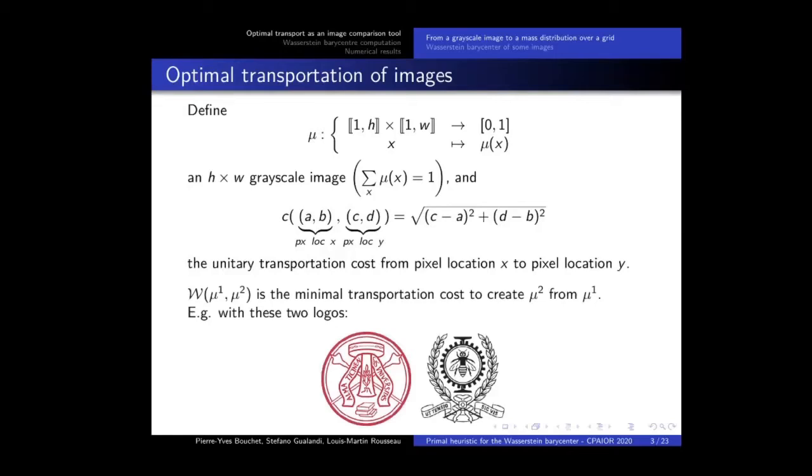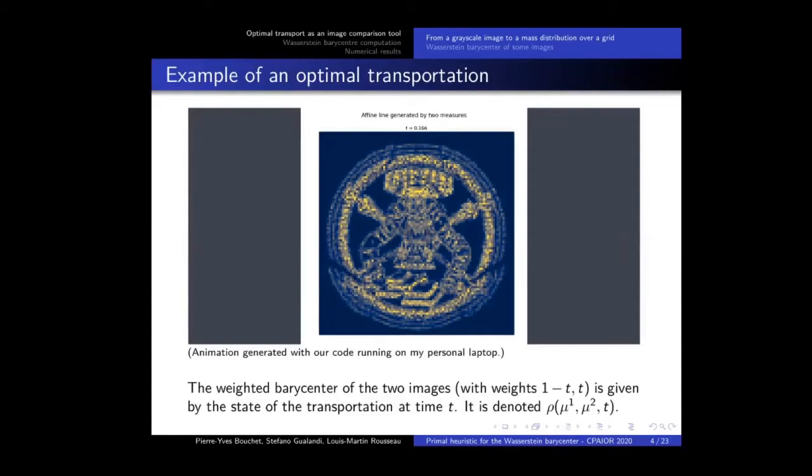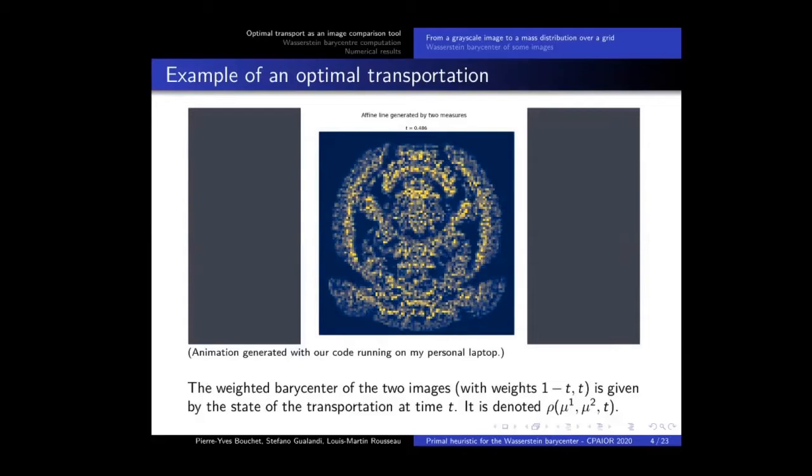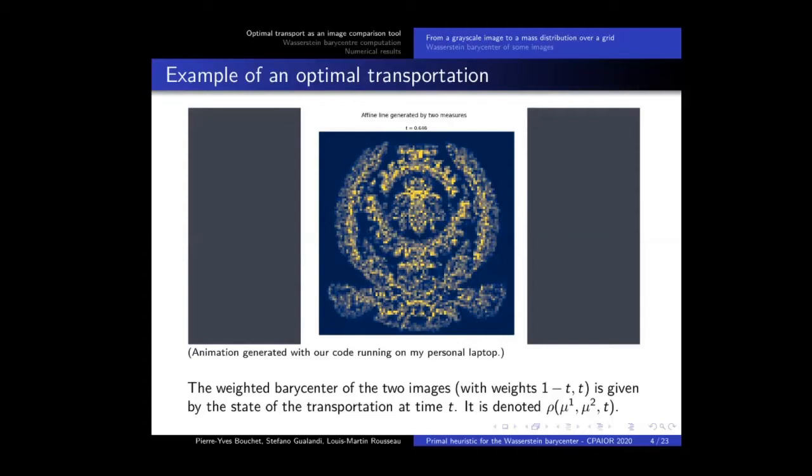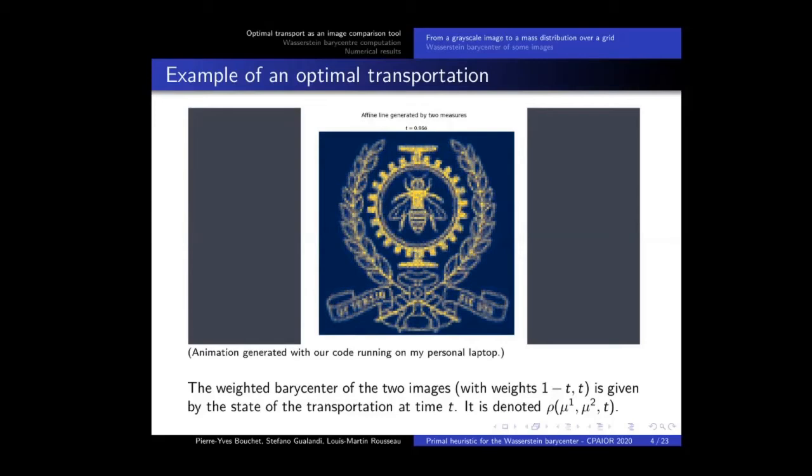This will be used because in optimal transport, we aim to find the most efficient, so the minimal transportation cost, to craft an image mu2 starting from image mu1. For example, with the two logos you see here, it will give something like that. We start from the first image, and as you can see on the video, the mass is moving slowly and continuously towards the second. This is interesting because we have a continuous number of intermediate images, intermediate interpolations, which can be seen as some weighted barycenters between the two inputs. It is quite easy to compute, and again, it gives a notion of barycentre between two inputs. And as you see on the video, the more the weight you give to the second image, the closer you have to the second.